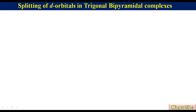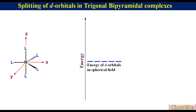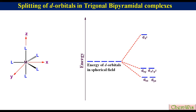Splitting of d-orbitals in trigonal bipyramidal complex. This is the general structure of a trigonal bipyramidal complex. In this, the dz² orbital is in the direction of the ligands, so its energy will be higher than the average energy in the spherical environment. There are two more sets of orbitals: dxy and dx²-y², and dxz and dyz, lying below the average energy in the spherical environment.